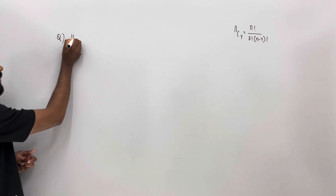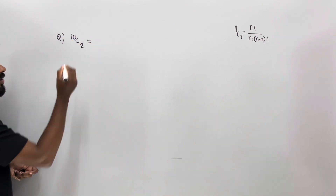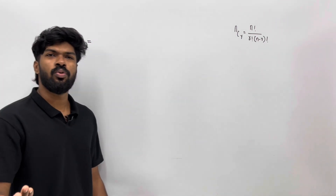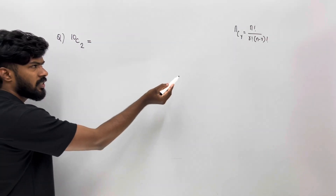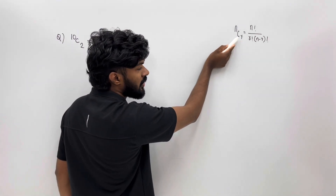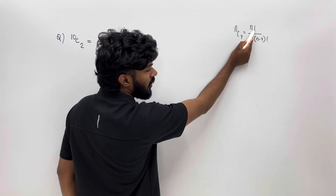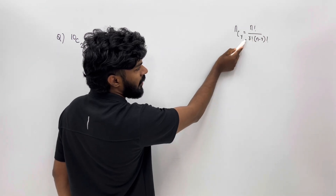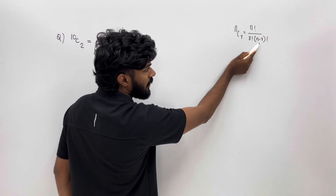Now we have to find 10C2. How do we find the equation? We are going to try to do the same thing. If you find the one factor in the same way, the one factor is equal to the other factor.